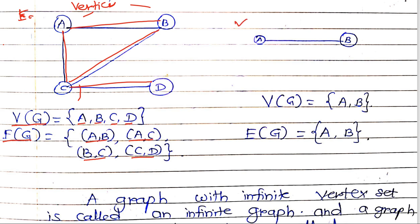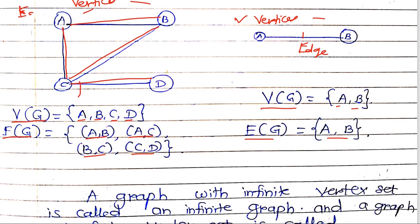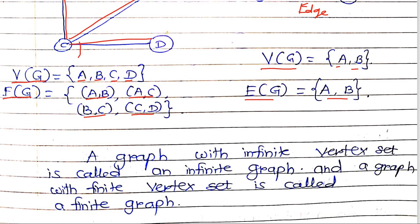Now take the example of this graph where there are only two vertices: A and B, and only one edge. So V of G is equal to vertex A and vertex B, and edge of G is A to B. This is a simple graph connecting two vertices with a single edge.